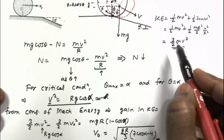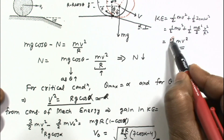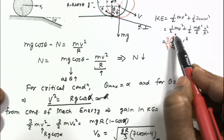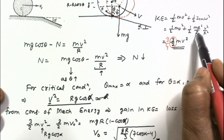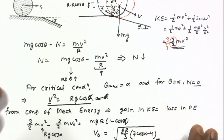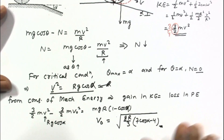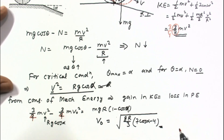There is one correction: the total kinetic energy is not (3/2)mv² but rather (3/4)mv², since it is (1/2)mv² + (1/4)mv². With this correction applied throughout, the final answer for the maximum value of V0 is confirmed as V0 = √(gR/3 · (7·cos(alpha) − 4)).